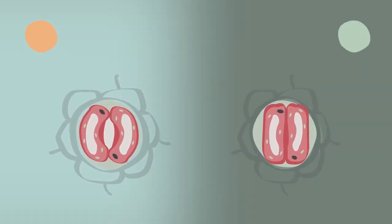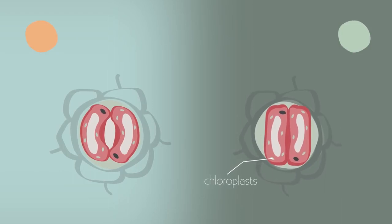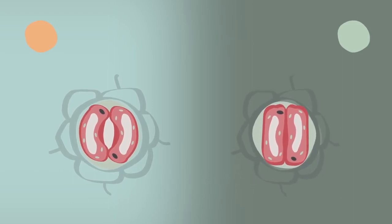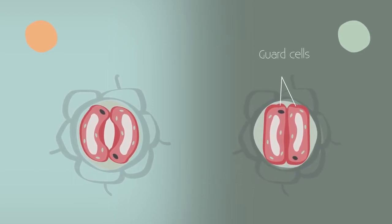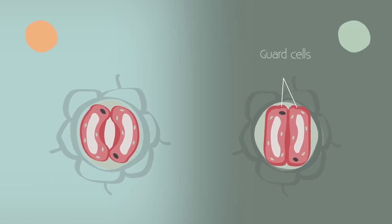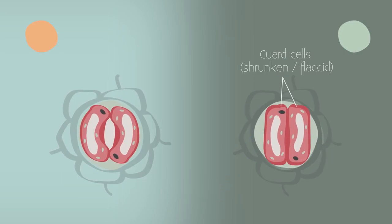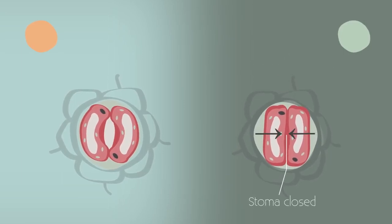During the night, all the sugar produced by the chloroplasts gets used up, so the water potential of the guard cells increases. More water, less sugar. The guard cells lose water by osmosis, and become flaccid, and the stomata starts to close. This reduces water loss.